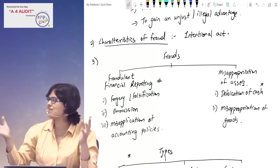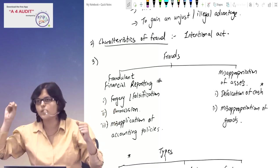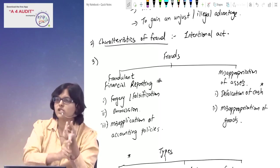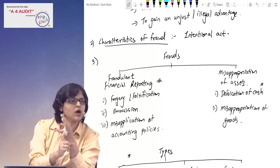Characteristic of fraud - basically it is an intentional act. We divided the discussion into two parts: fraudulent financial reporting and misappropriation of assets. There are three parts in fraudulent financial reporting: forgery or falsification, omission, and misapplication of accounting policies.